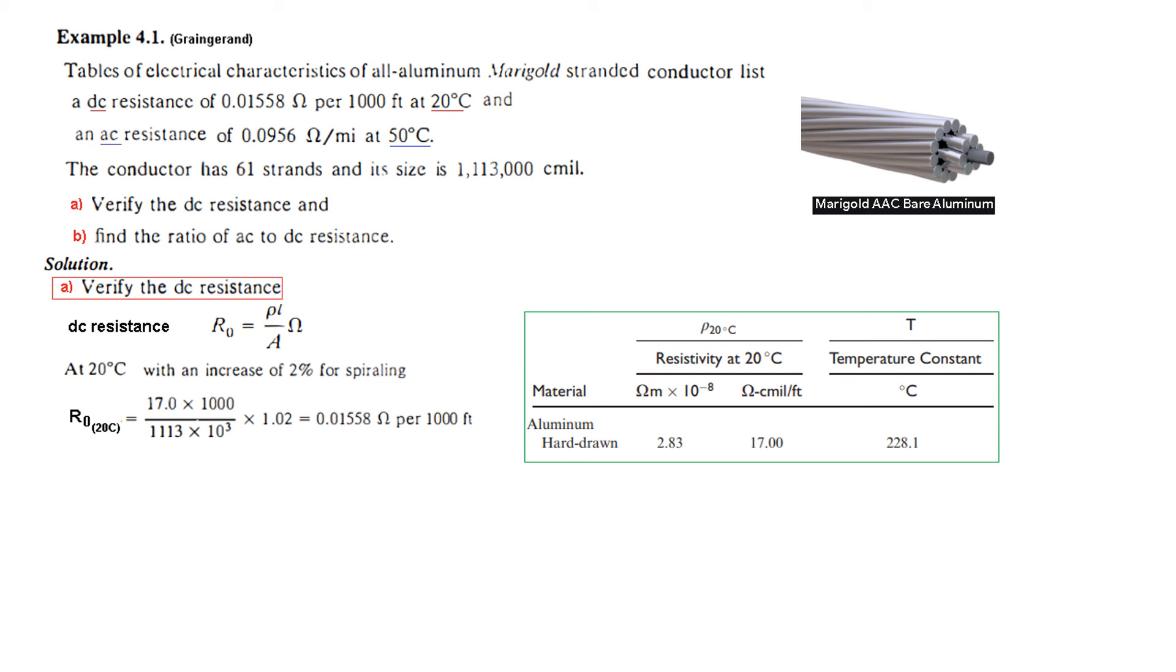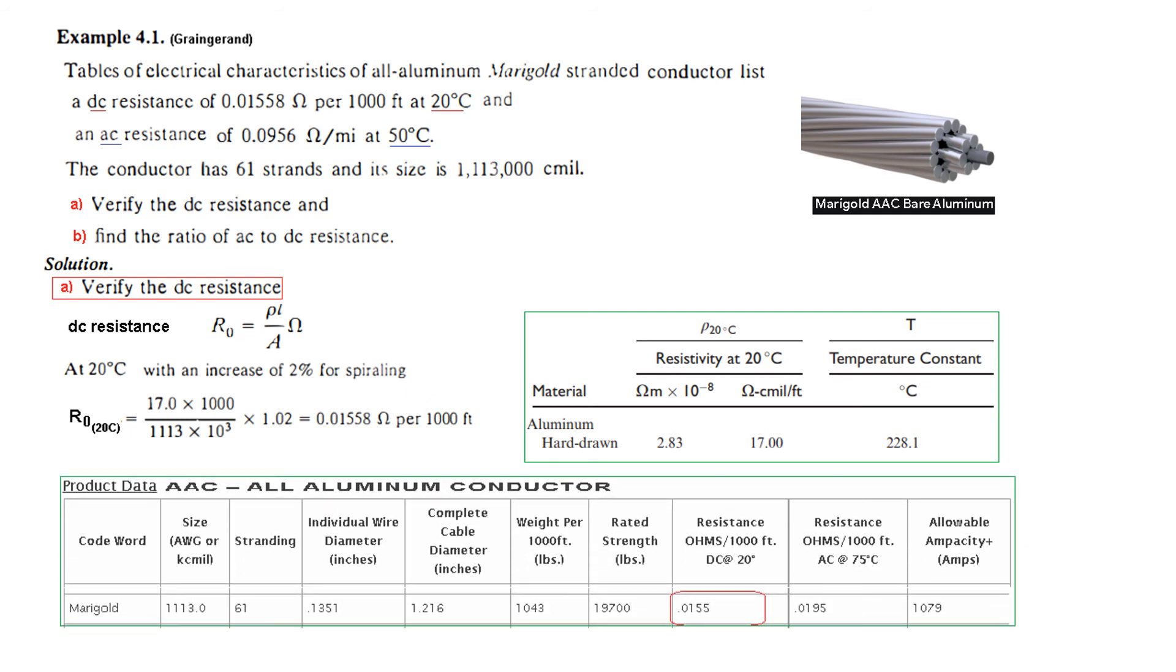There is a 2 percent increase we have to keep in mind. So first, ρ is 17, length is 1000 feet, area from here is 1,113,000 cmil, multiplied by 2 percent increase. So R at 20 degree will be 0.01558 Ω per 1000 ft. This is our calculated value and this is the value from the table. They match. We can also refer to another table - here the resistance for 1000 feet at 20°C is 0.01558. So this is the first part.